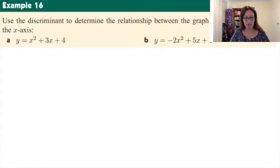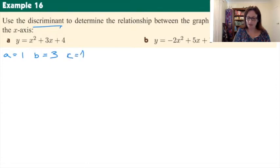Okay, so two examples here for this video. Use the discriminant to determine the relationship between the graph of each function and the x-axis. So we must use the discriminant. When we do that, I find it handy to write out what your coefficients are. a = 1, b = 3, and c = 4 to use that in the discriminant.